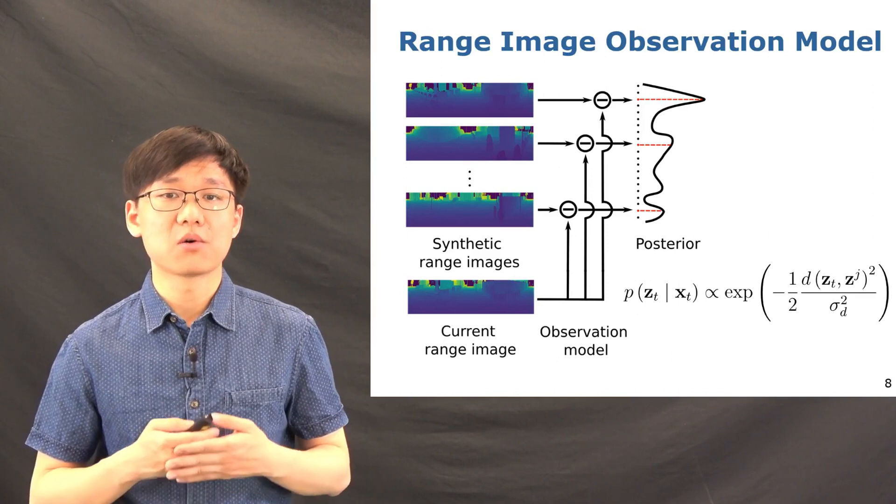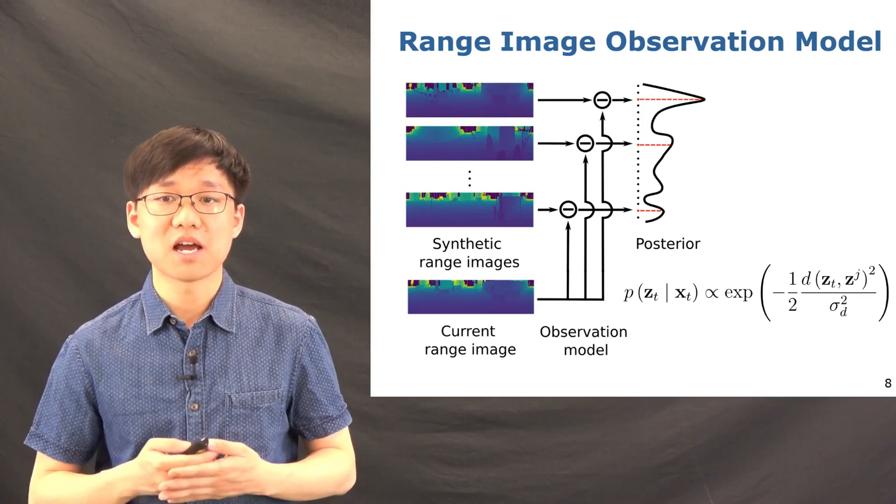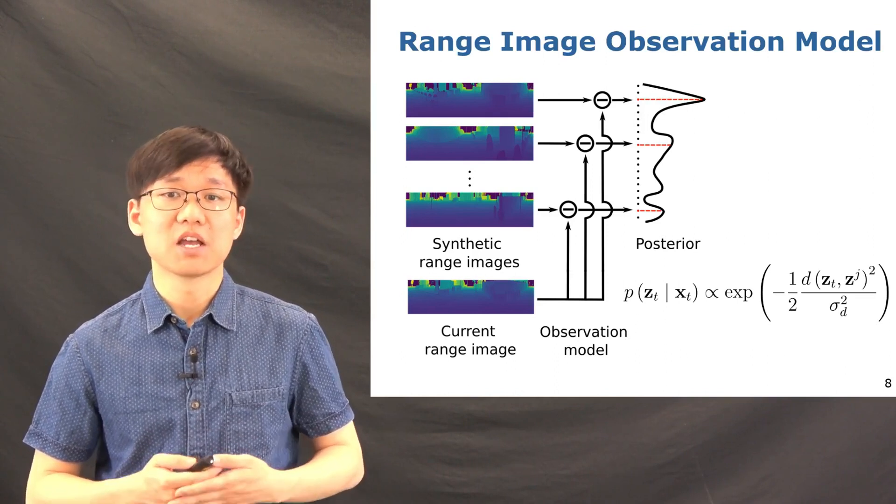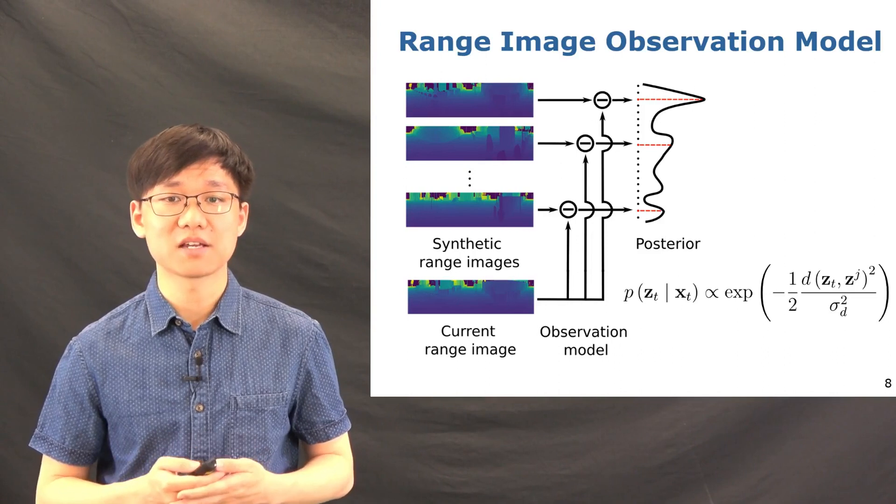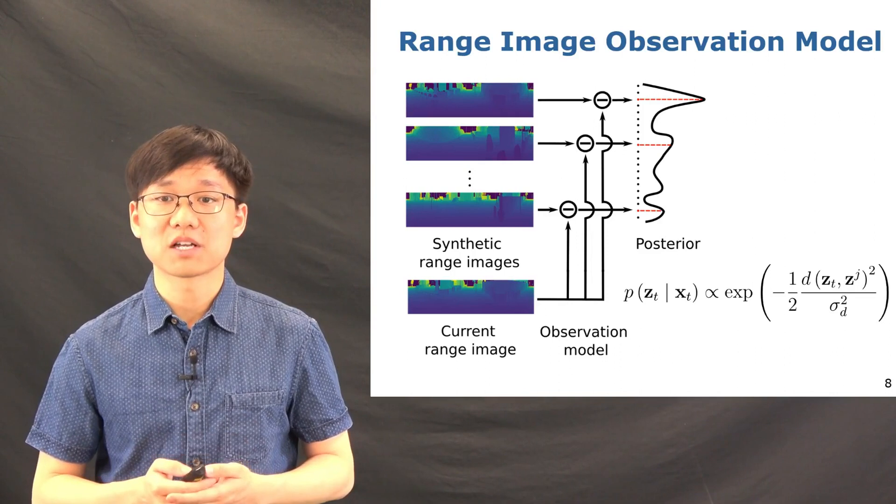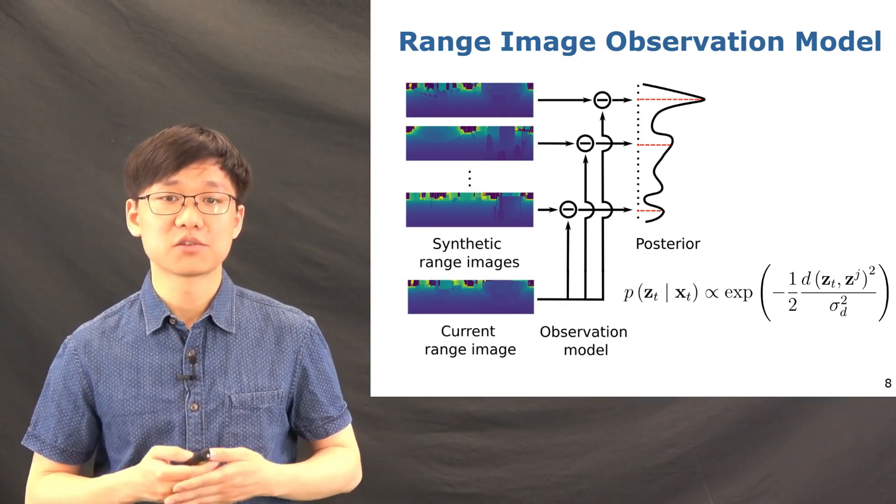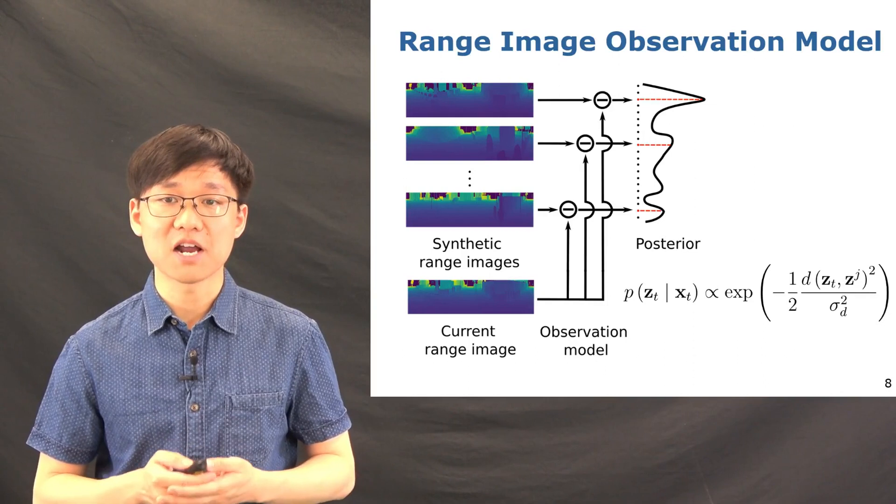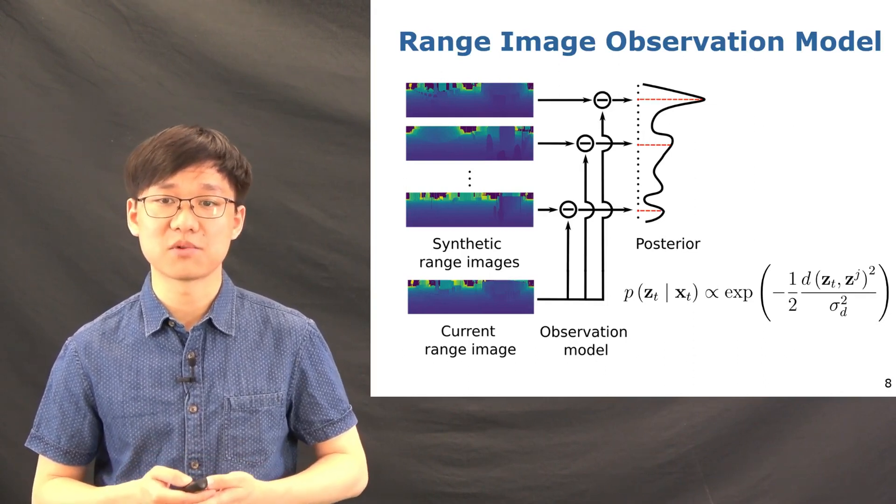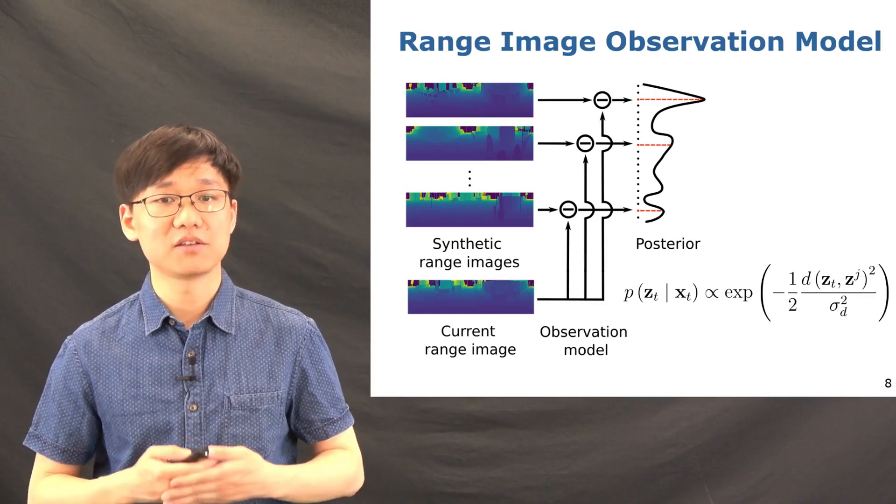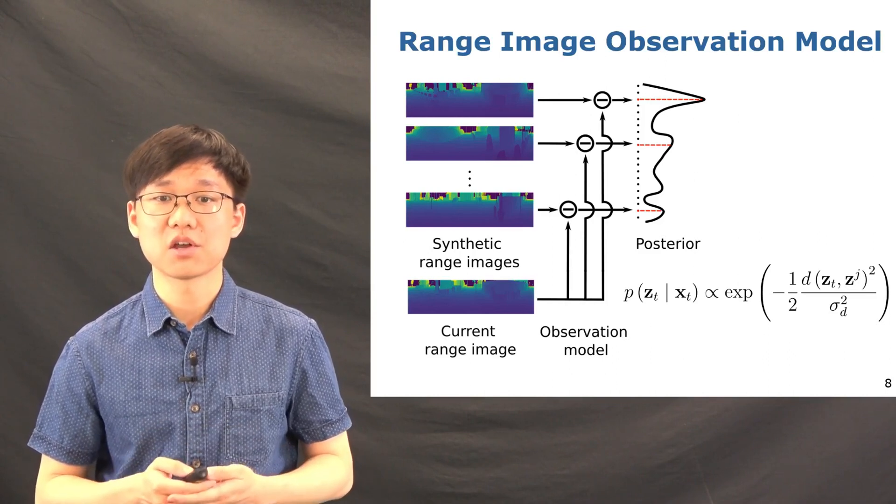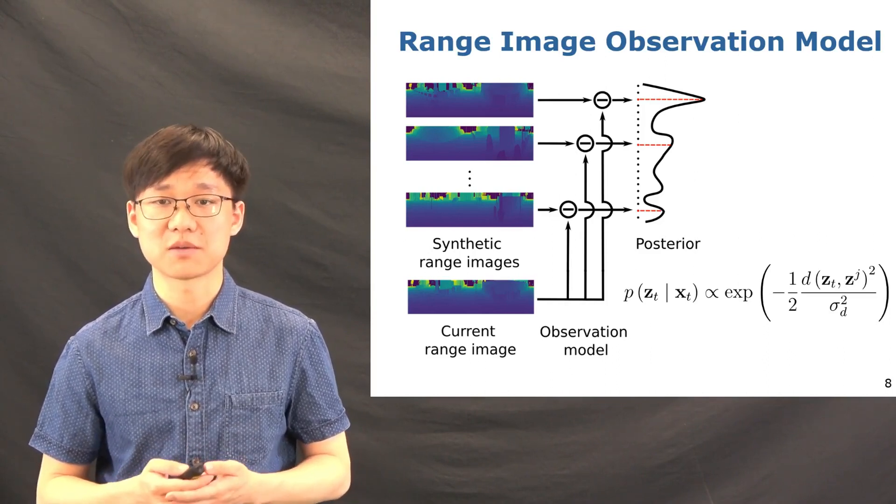Though it is simple, our observation model can estimate the likelihood for the whole state space including location and rotation at once using the same model, which is quite elegant and fast. Note that in this work, we mainly focus on designing a framework to use the range images and the mesh maps for LiDAR-based global localization. One could also easily use other methods to calculate the similarity between range images and integrate it into our pipeline. For example, using the cross-correlation or other feature or learning-based methods to calculate the similarity.